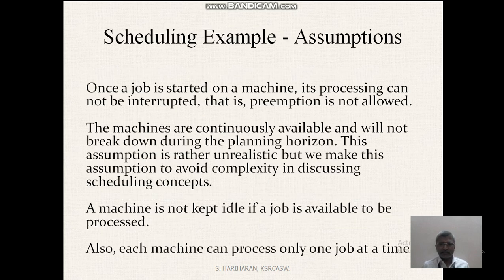Scheduling example assumptions. Once a job is started on a machine, its processing cannot be interrupted — that is, preemption is not allowed. The machines are continuously available and will not break down during the planning horizon.